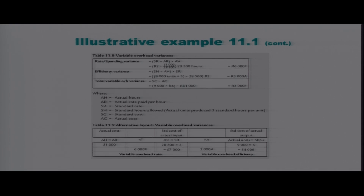For the variable overheads expenditure variance, the formula is: standard rate minus actual rate, multiplied by actual time. The standard rate from the budgeted information is R2 per hour. The actual rate was not given, so we calculate it: actual variable overheads of R51,000 divided by the actual labor hours of 28,000, giving a rate of R1.79 per hour. This is then multiplied by the actual hours worked, which were 28,500.